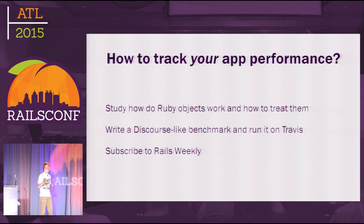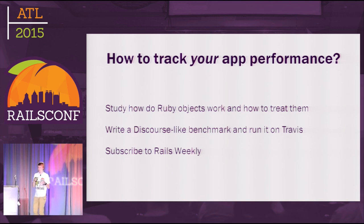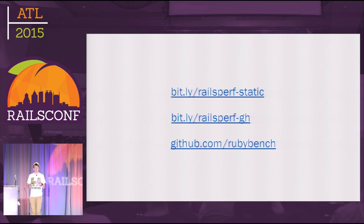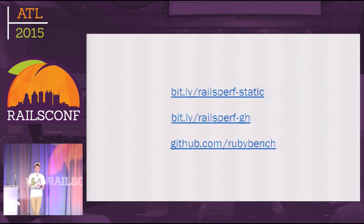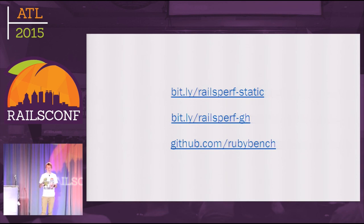You can also subscribe to the Rails Weekly mailing list, also called This Week in Rails. In this mailing list, Rails contributors write about what happened in the Rails repo that week — new features, or if a regression or issue was fixed. Here are some links from my talk: a static page with Rails benchmarks from Rails 3.2 to 4.2, the initial prototype of the Rails benchmarking service I call Rails Perf — it's open source on GitHub — and the RubyBench components on GitHub in our organization.